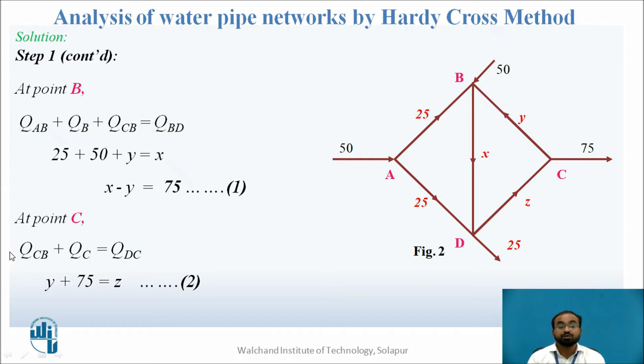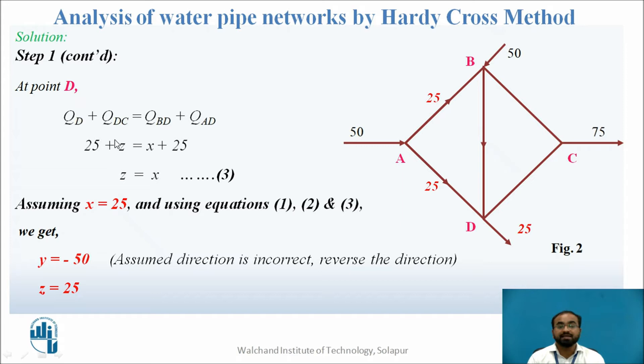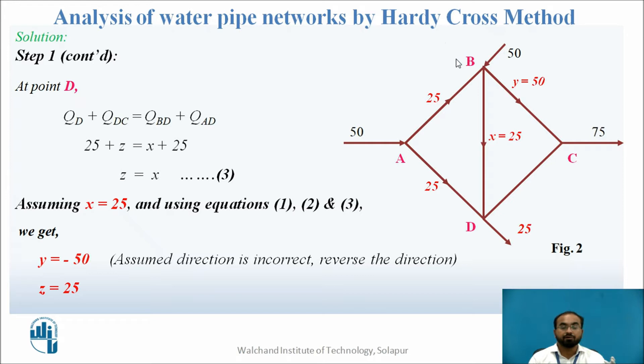At point C: Q(CB) plus Q(C) equals Q(DC), that is Y plus 75 equals Z. That is equation 2. At point D: Q(D) plus Q(DC) equals Q(BD) plus Q(D), that is 25 plus Z equals X plus 25, so Z equals X — that is equation 3. Using these three equations and assuming X equals 25, I get Y equals minus 50, meaning my assumed direction is wrong. So I correct the direction: Y equals 50 and flow rate is from B to C, and Z equals 25.